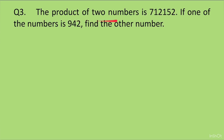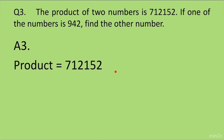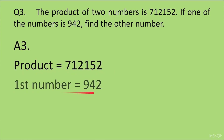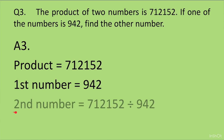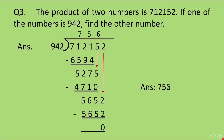Question 3: The product of two numbers is 712152. If one of the numbers is 942, find the other number. The product is 712152 and the first number is 942. To find the second number, we will divide. Second number is equal to 712152 divided by 942. When we divide, we get the answer as 756.